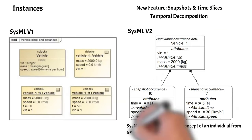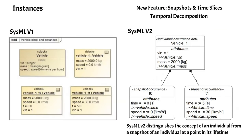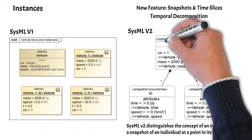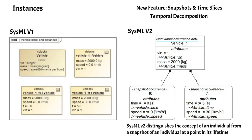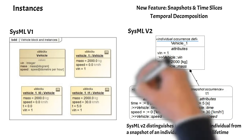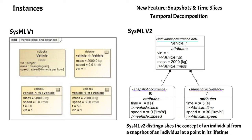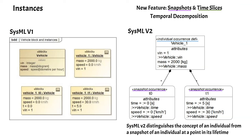SysMLv2 introduces several new features regarding instances. An individual occurrence represents a specific serial number of a system during its lifetime. The snapshot occurrence represents a moment in time during the owning system's life. SysMLv1 does not have the ability to connect instances together in this manner.